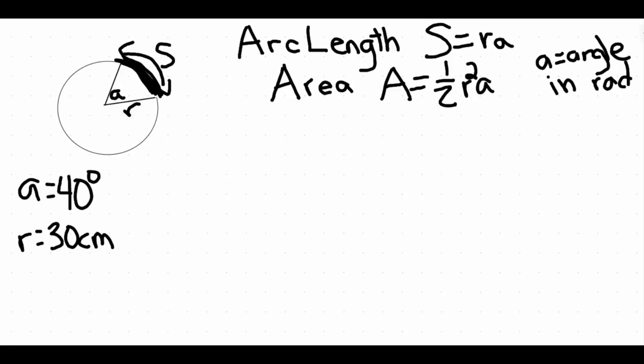I have the formulas for both scenarios already on the board. There's a formula for arc length and a formula for the area. I already have a problem set up over here as well. We have that the angle is going to equal 40 degrees and the radius is 30 centimeters. Now we're going to find the arc length and the area using the given information.